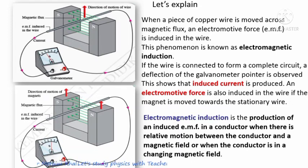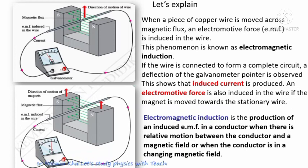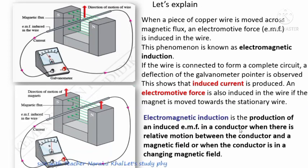Similarly, when the magnet moves upwards, this is equivalent to the wire moving downwards, which is why the deflection is in the opposite direction. Thus, we can define electromagnetic induction as the production of an induced EMF in a conductor when there is relative motion between the conductor and the magnetic field, or when the conductor is in a changing magnetic field.